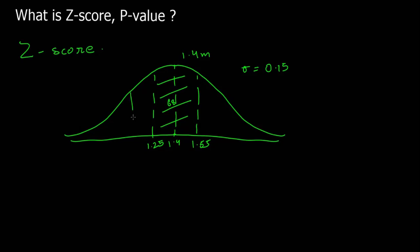Then this is two standard deviations, which is 1.1 to 1.7. And then third standard deviation, which is 0.95.